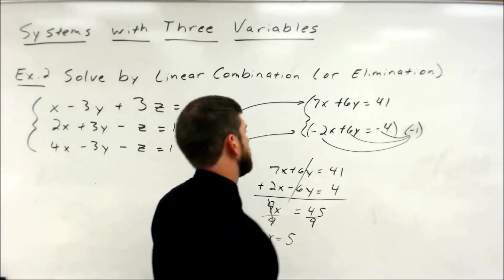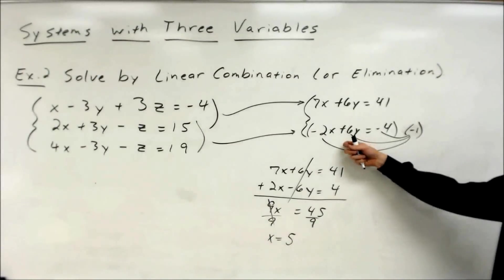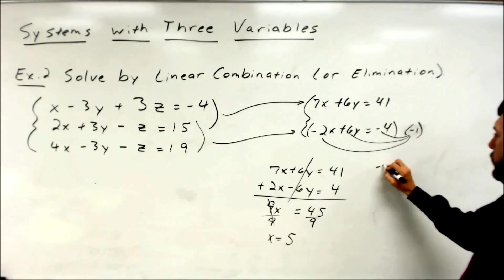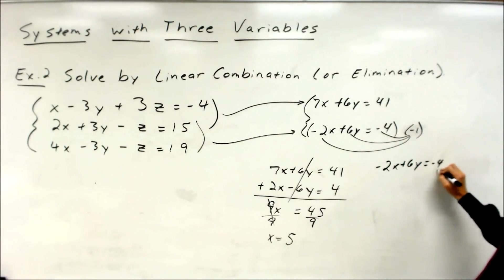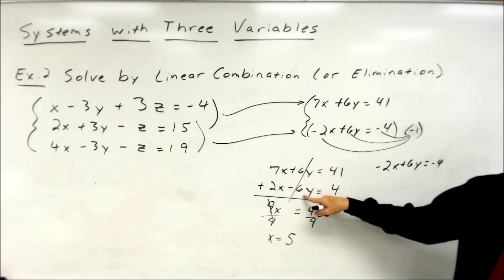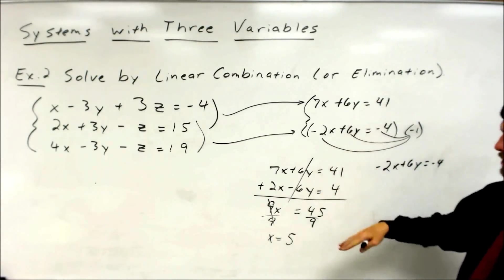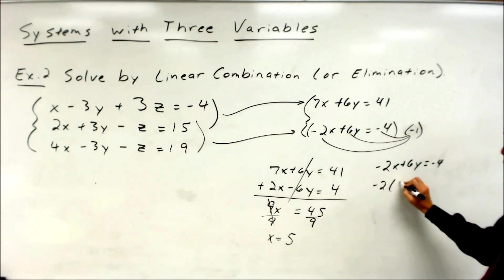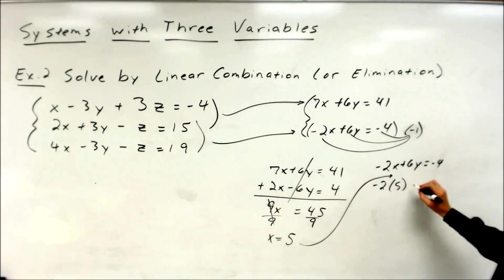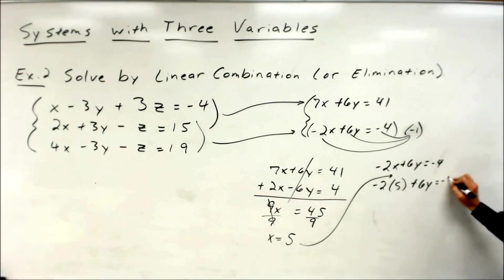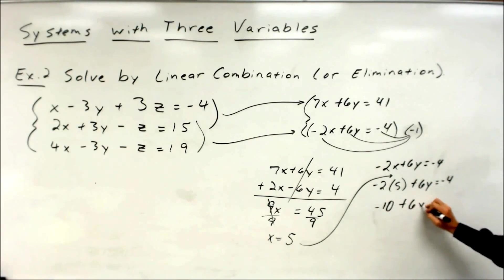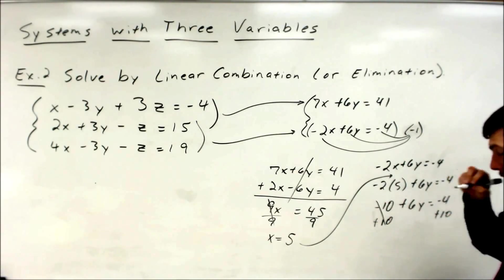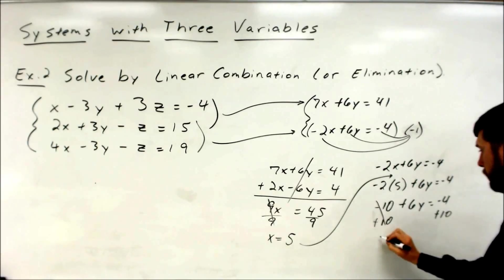I like the second equation — it's got a little bit smaller numbers to work with. So negative 2x plus 6y equals negative 4. Plug 5 in for x: negative 10 plus 6y equals negative 4. Move the 10 over by addition: 6y equals negative 4 plus 10 is 6. So y equals 1.